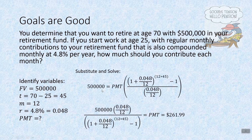We use our formula, substitute, and solve. Future value is 500,000; PMT is unknown but we can fill in the rest. To isolate PMT, we divide both sides by the fraction — or equivalently, multiply by the reciprocal. The 0.048 over 12 that was in the denominator moves to the numerator on the left, and what was in the numerator moves to the denominator. Entering this with all the parentheses, you'll find that the payment is $261.99.